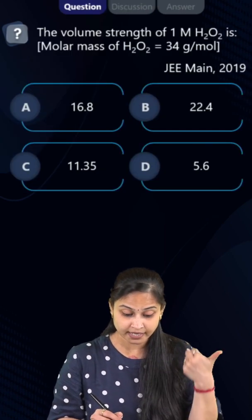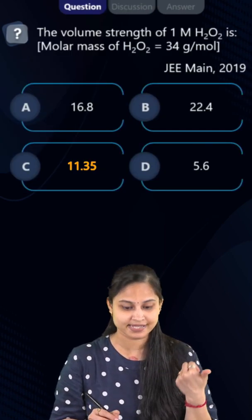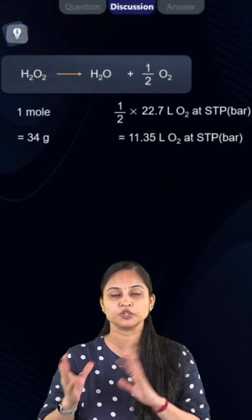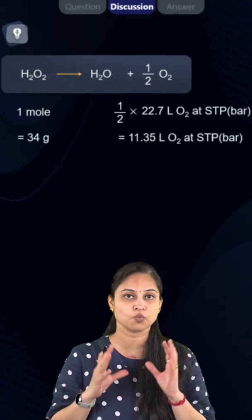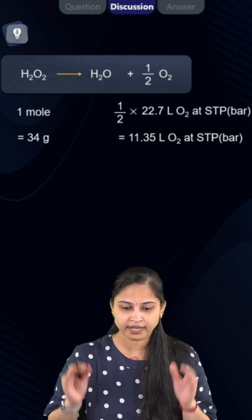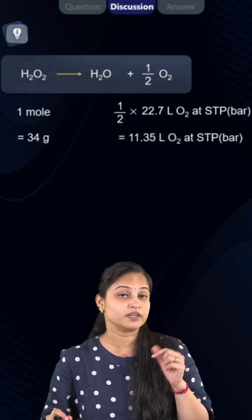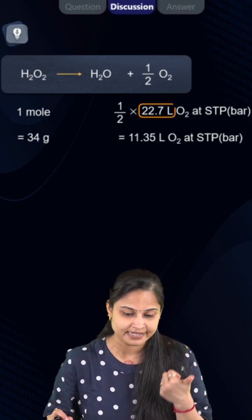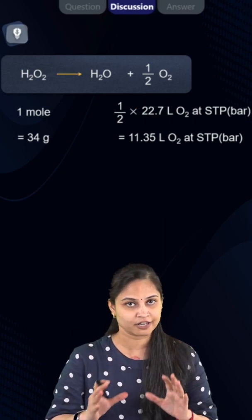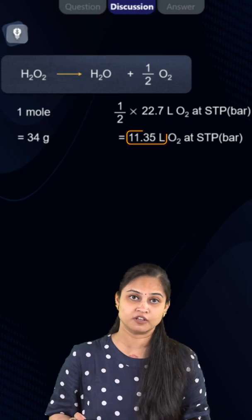Well in the options we have been given 11.35, so according to new STP wherein the pressure is equals to one bar, the volume occupied by one mole of the ideal gas is actually equals to 22.7 liters. So here our calculations come out to be 11.35 which is the right answer.